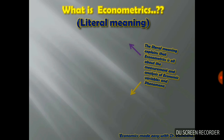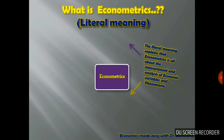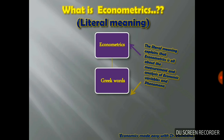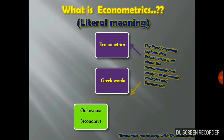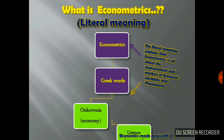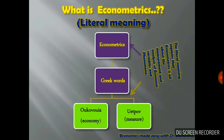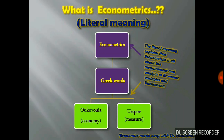Here I would start with a few basic concepts and facts. So let's start with understanding the literal meaning of the word econometrics. The word econometrics is derived from two Greek words: the first means economy, and the other means measure. Thus, the literal meaning defines that econometrics is majorly concerned with the analysis and measurement of economic variables and phenomena.